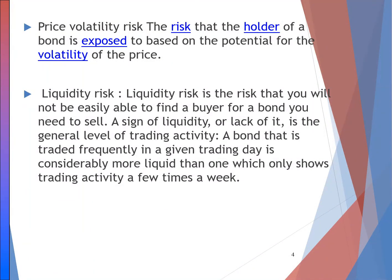Next is price volatility risk — the risk that the holder of a bond is exposed to based on the potential volatility of the price. Price volatility risk means that the price of bond could be volatile; it could go up and go down depending on the demand and supply for the bond. The more volatile the price of bond, the higher the risk.